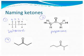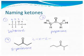Let's look at this structure. How many carbons? Five. So this is pentanone, but I do need a number here — three. It's 3-pentanone. Because I could draw a 2-pentanone, which would be different. So if we wanted to draw 2-pentanone, it would look like this — that would be 2-pentanone.